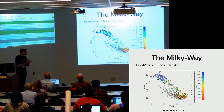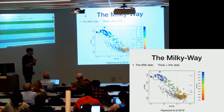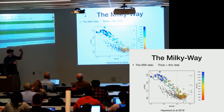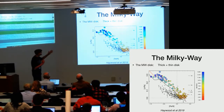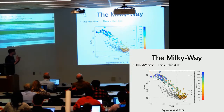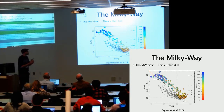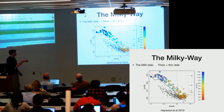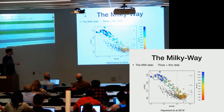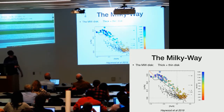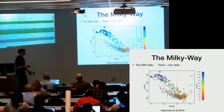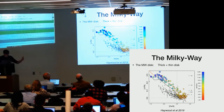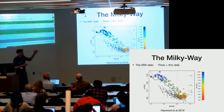Another important property found within the disk is that there is a thin disk and a thick disk that you can split very well when you look at the chemistry space. The thin disk has lower alpha versus iron properties and the thick disk has higher alpha versus iron. Also the thick disk has lower iron elements and the thin disk has higher iron elements. This is something we are seeing now with Gaia and it will probably be much better defined in the Gaia DR3 in 2021.